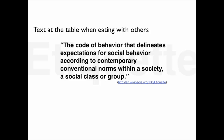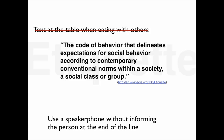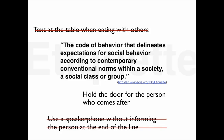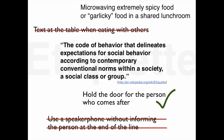For example, one should not text at the table when eating with others. One should not use a speakerphone unless the person at the end of the line is alerted and is okay with it. Whoever arrives at the door first should hold the door for the person who comes next, regardless of gender. One should also avoid microwaving extremely spicy or garlicky food in a shared lunchroom. One follows etiquette rules to show respect to other individuals in community or social, professional, or any other kind of groups.